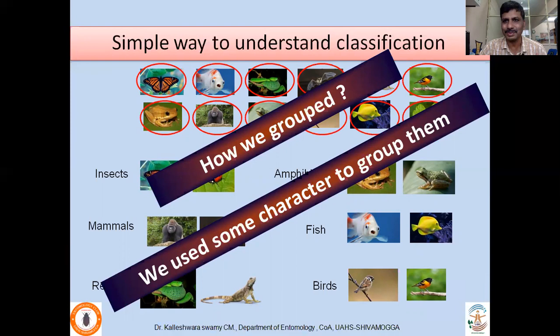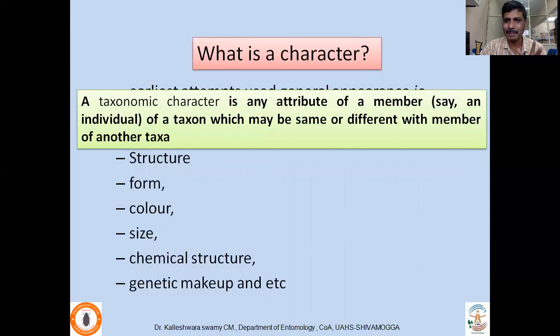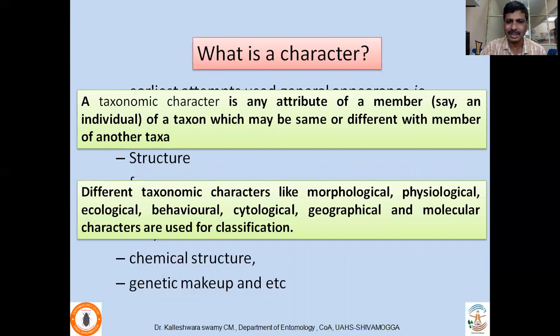So what is the character? Previously, people were using various morphological characters, anatomical characters, physiological similarities, etc. — structure, form, color, size, chemical structure, genetic makeup — anything can be used. There is no hard and fast rule that you must use a particular character. A taxonomic character is an attribute of a member — say, an individual — of a taxon which may be the same or different from members of another taxon. Eye color, length of proboscis, abdominal segments, leg type, wing type — any character. Different taxonomic characters include morphological, physiological, ecological, behavioral, cytological, geographical, and molecular characters.